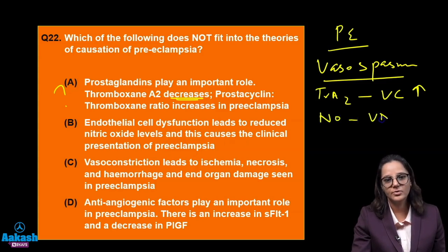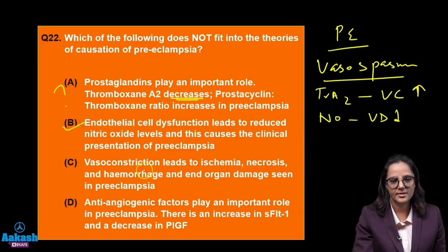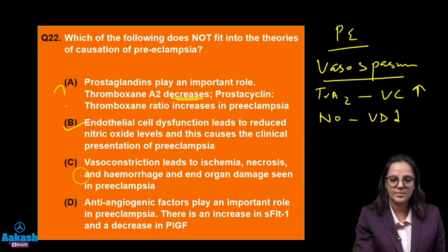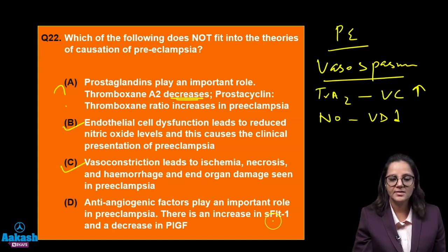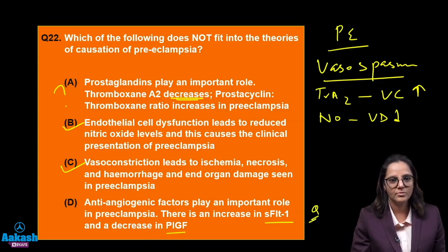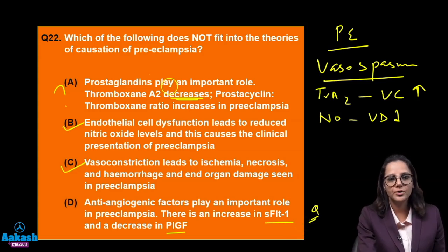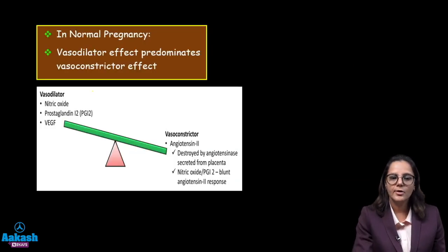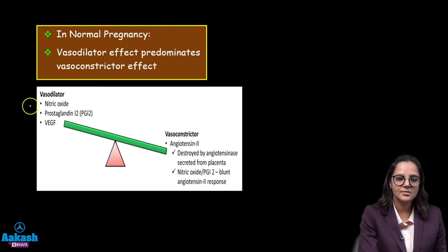Vasoconstriction leads to ischemia, necrosis, hemorrhage, and end-organ damage — that fits preeclampsia. Anti-angiogenic factors play an important role — increase in sFLT1 and decrease in PGF. I am not sure about those values, but I am certain thromboxane A2 should be increasing because it is a vasoconstrictor. So the answer will be option A, the one saying thromboxane A2 decreases.